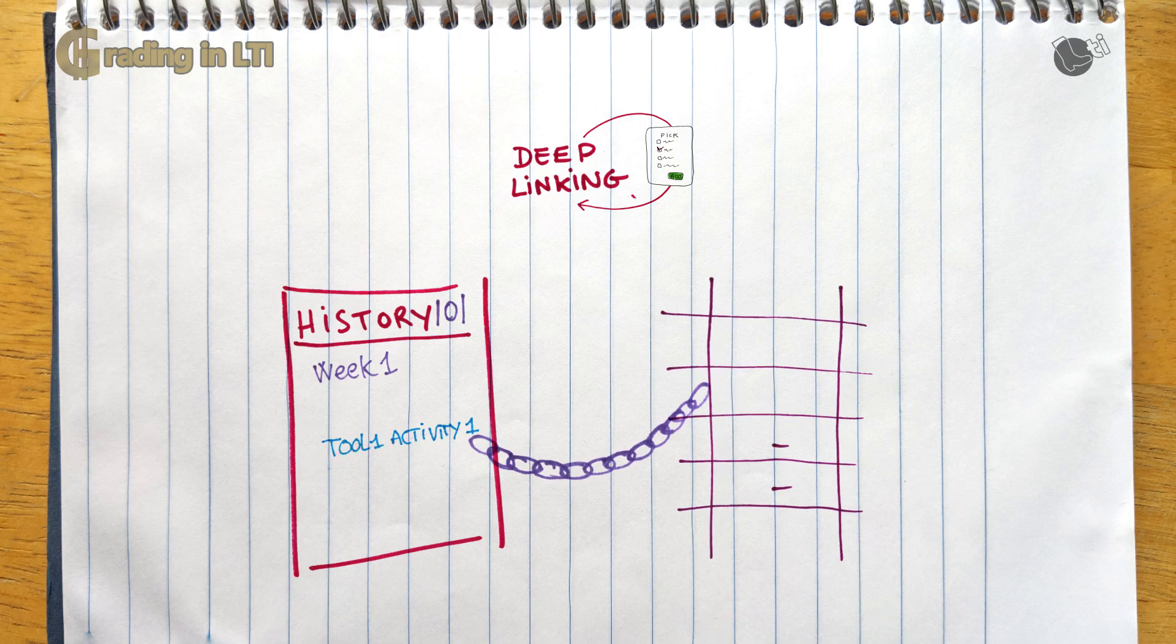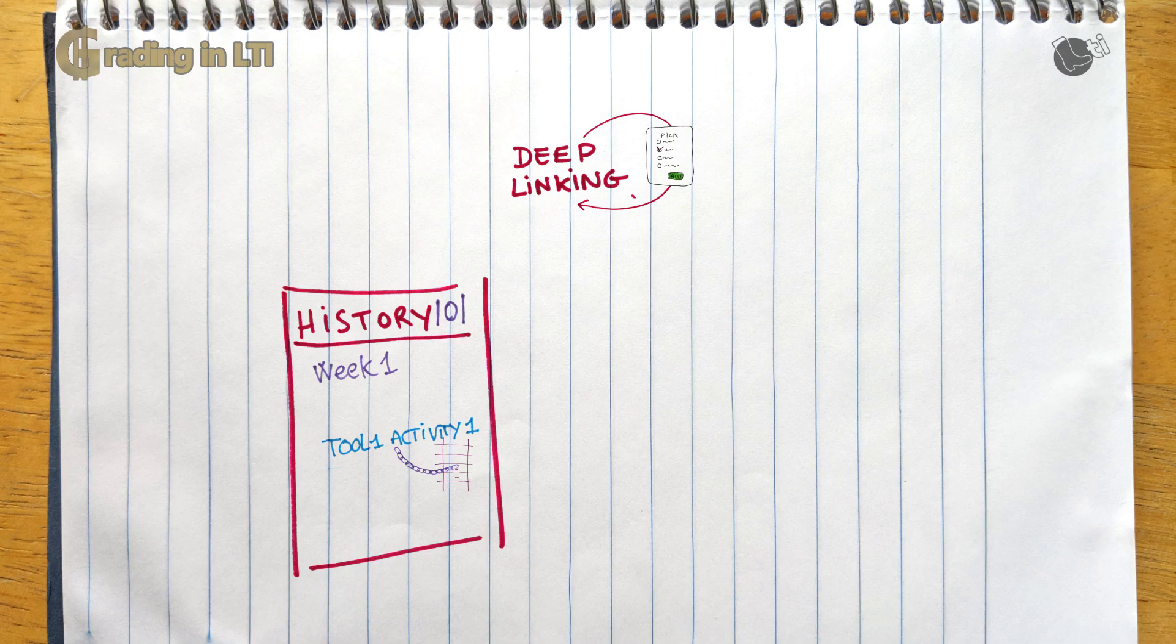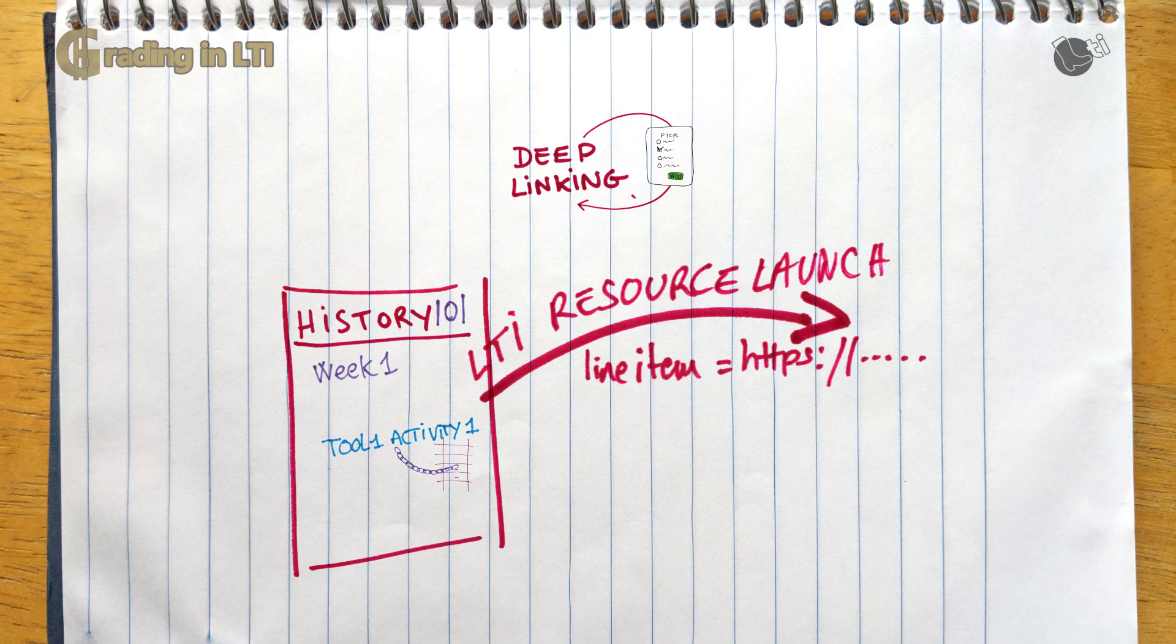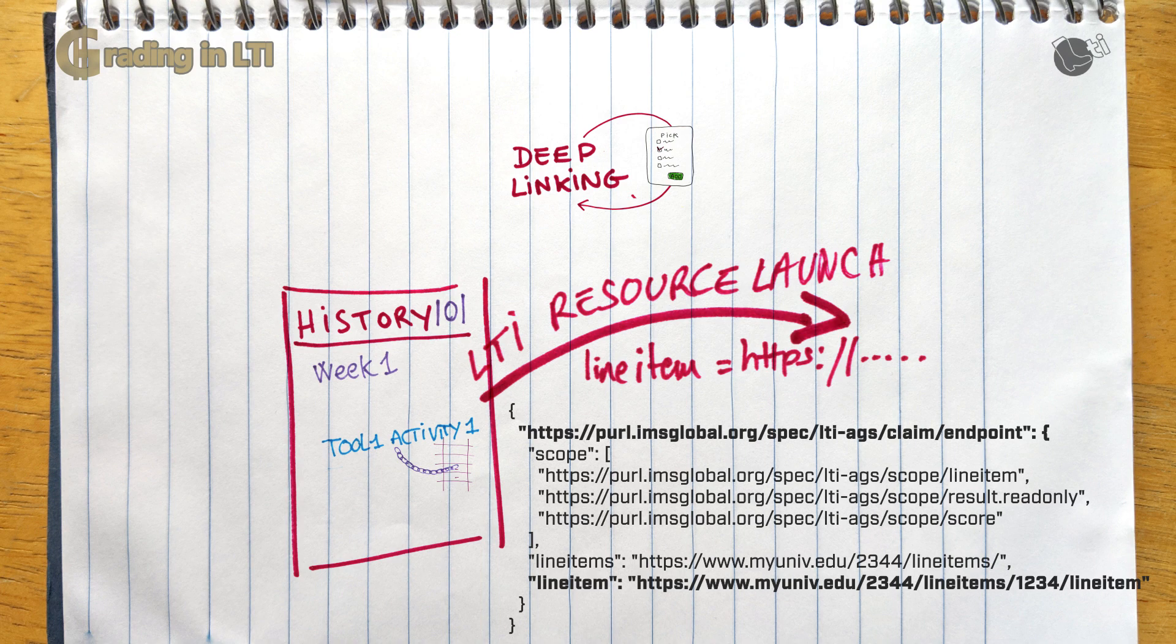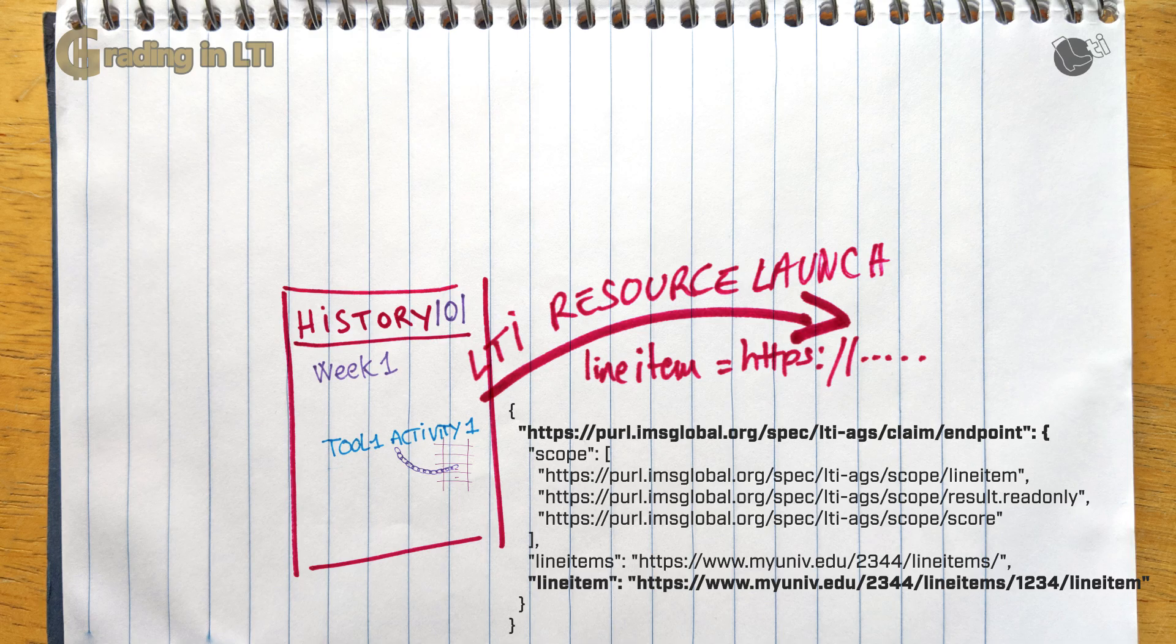But what really matters is that since that link, that resource link is explicitly bound to that line item, then when the activity is launched, when the user clicks on that resource link, the platform will include in the LTI message the line item URL for the associated line item. You'll find it into the specific section of the LTI message in a specific claim called the assignment and grade service claim. And so why does it matter that this line item URL is in there? Well, that URL is what you will use to actually push scores back to the LMS.